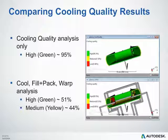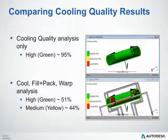Comparing cooling quality results: running a cooling quality analysis only showed 95% of the part as green with high cooling quality. However, when running a cool, fill, pack, and warp analysis with cooling lines modeled, only 51% of the part showed high cooling quality, with another 44% showing medium quality. The cooling quality analysis is a good general comparison tool, but when you're close to your final design, consider running a cooling analysis combined with your fill, pack, and warp analysis.